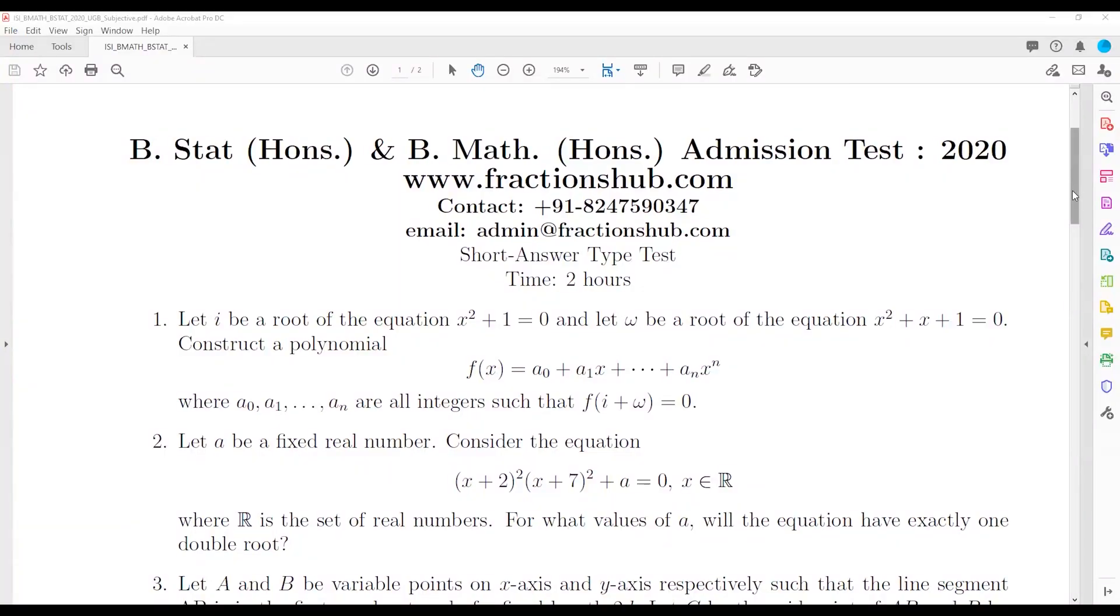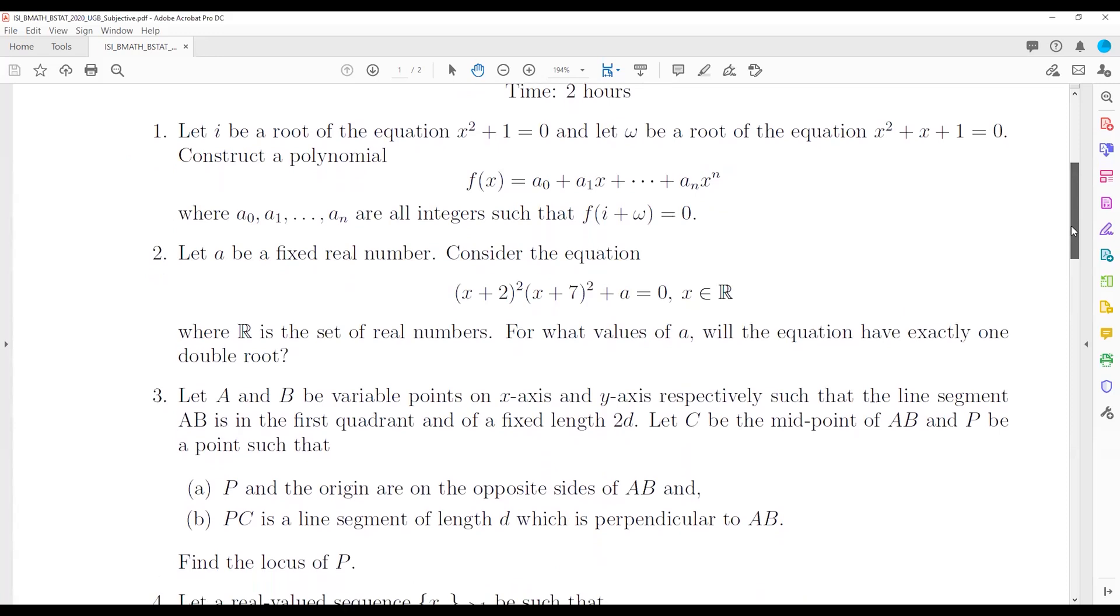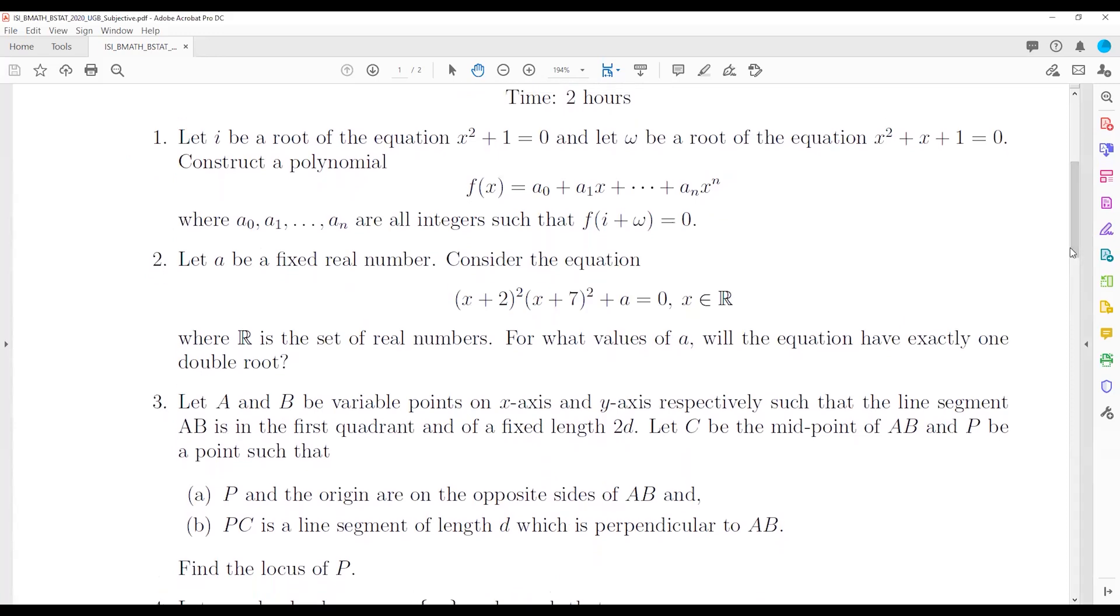Let's discuss question 2, which says that let a be a fixed real number. Consider the equation (x+2)²(x+7)² + a = 0, where x is a real number.